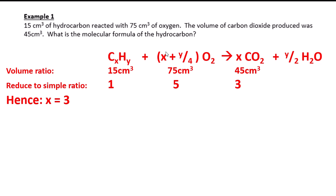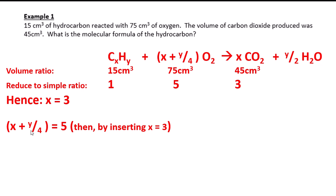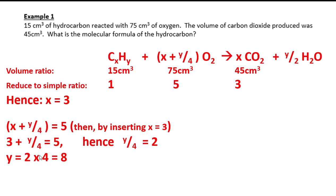To find y, we use the fact that x + y/4 must equal 5 (the oxygen coefficient). Substituting x = 3 gives 3 + y/4 = 5, so y/4 = 2, and multiplying both sides by 4 gives y = 8. Therefore the formula of the hydrocarbon is C3H8 — by looking at the volume ratios, we've worked out the molecular formula.